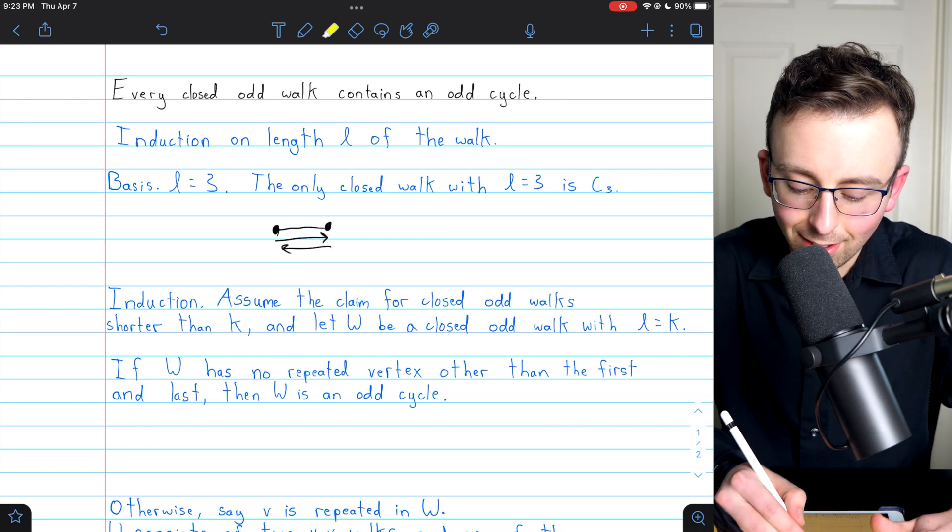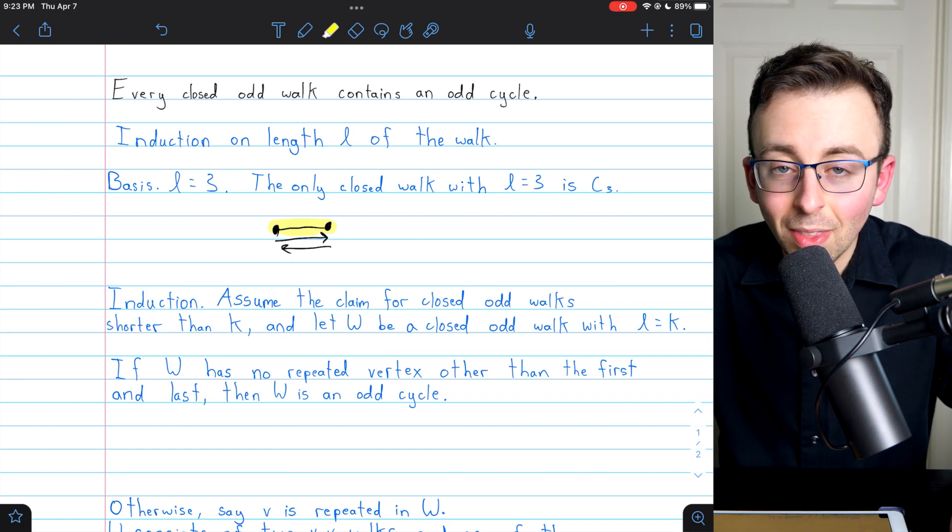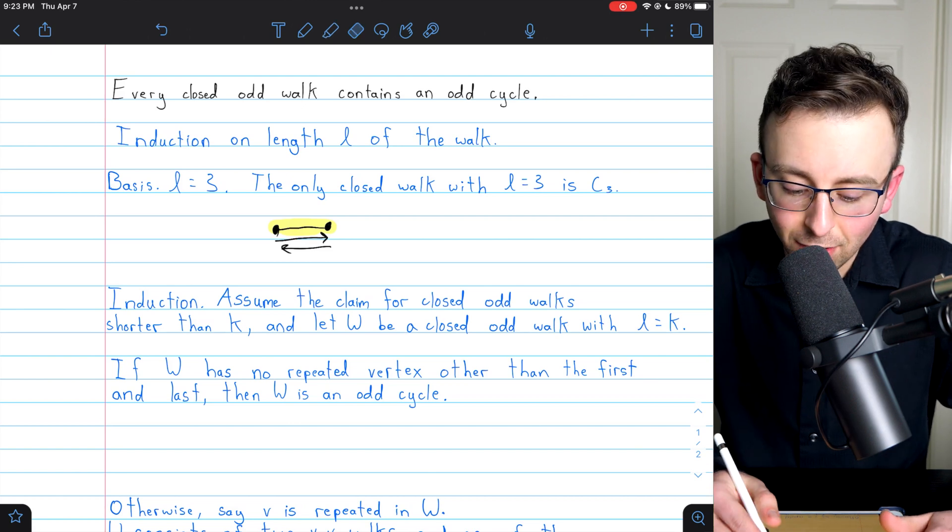We could leave the first vertex and then go right back along the same edge. That's not a cycle, but it is a closed even walk. So clearly, closed even walks do not have to have cycles.